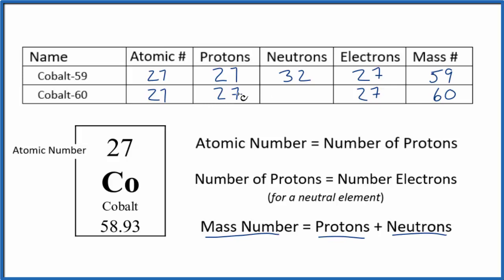Cobalt 60, so 27 plus 33 equals 60. Cobalt 60 has 33 neutrons and a mass number of 60.